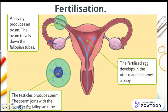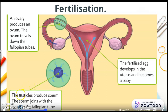Fertilization. An ovary produces an ovum. The ovum travels down the fallopian tubes. Then, in the man's body, the testicles produce sperm. The sperm joins with the ovum in the fallopian tube, in here. The fertilized egg develops in the uterus and becomes a baby. This is the uterus.